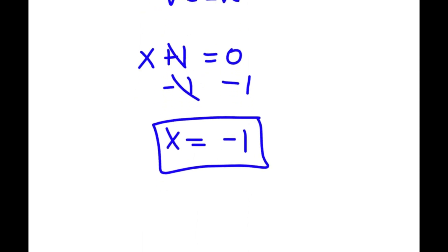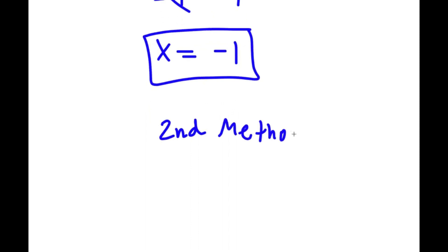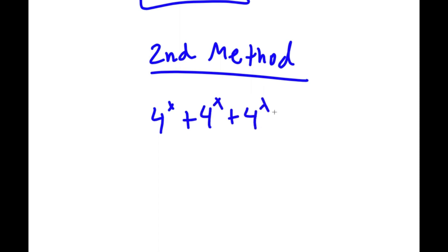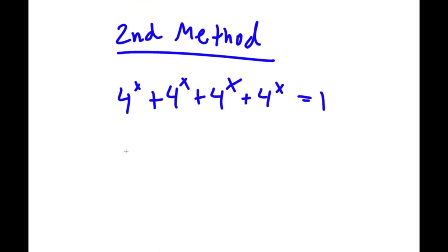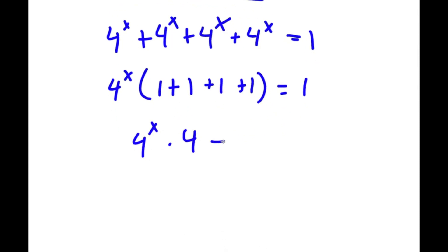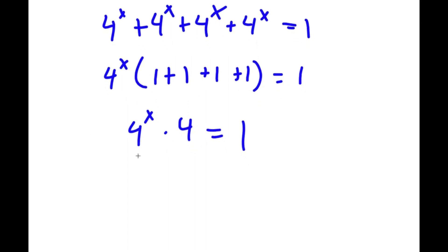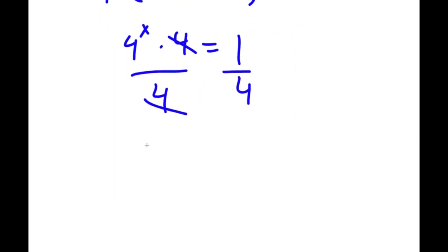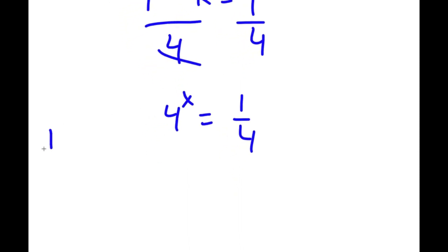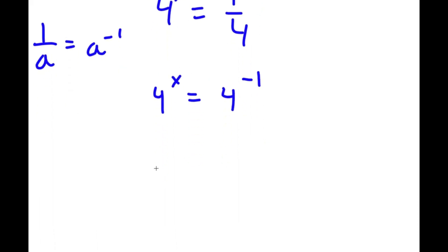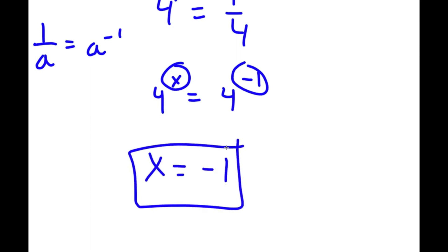Subtracting 1 from both sides, x equals negative 1. I also have a second method: starting again with 4 to the power of x times 4 equals 1, this time I simply divide both sides by 4, giving 4 to the power of x equals 1 over 4. Since 1 over a equals a to the power of negative 1, we get 4 to the power of x equals 4 to the power of negative 1. So x equals negative 1 again — two ways of solving this equation.